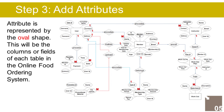The Site Information entity has the following attributes: ID (Primary Key, represented with underline), name, description, contact, info, address, user ID (Foreign Key), and last update.